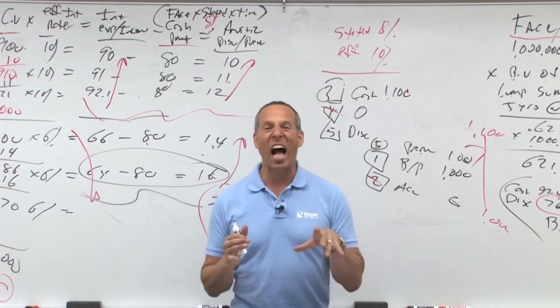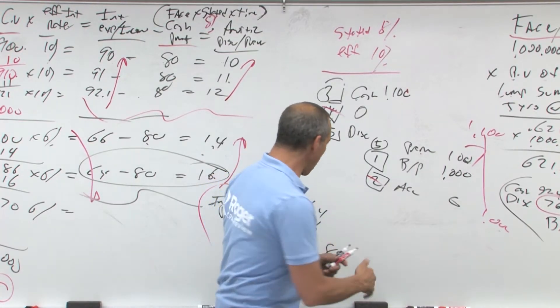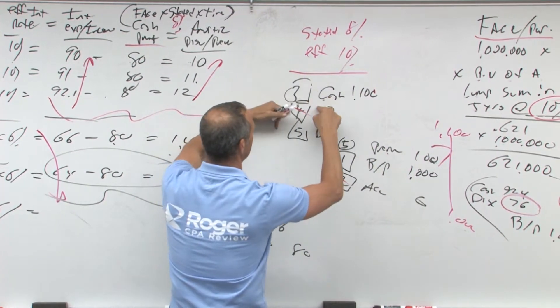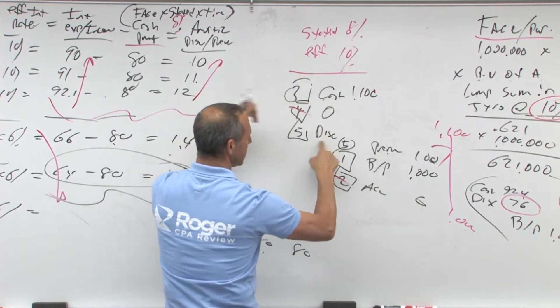All right, let's talk about bond retirement. So we've talked about issuing a bond and remember issuing the bond, credit bonds payable, accrued interest, cash, boom, boom. This is BIC, this was discount or premium.